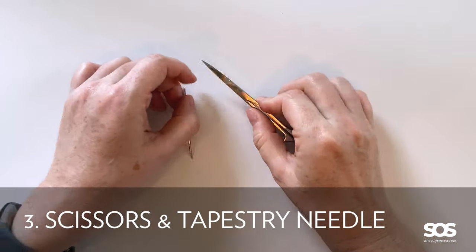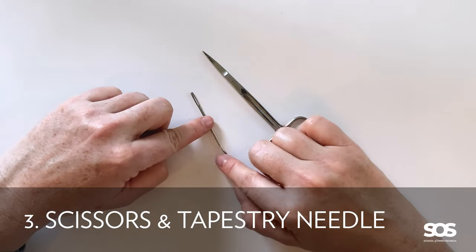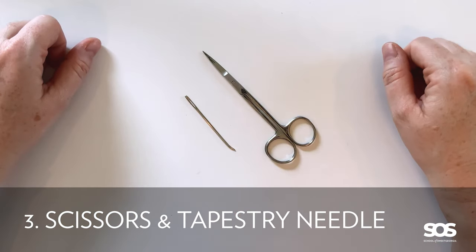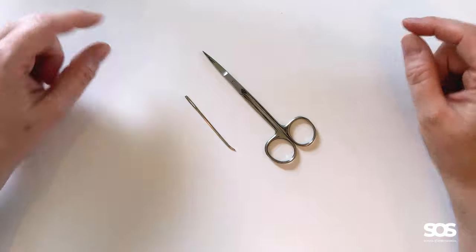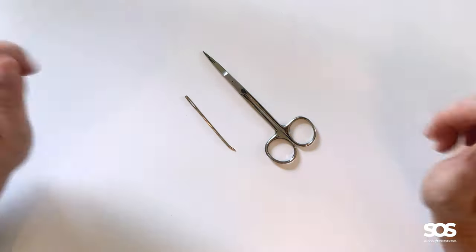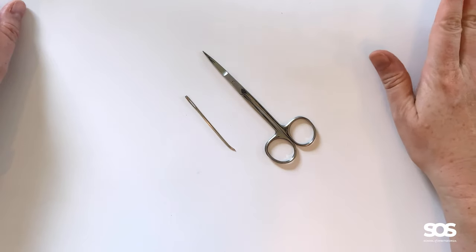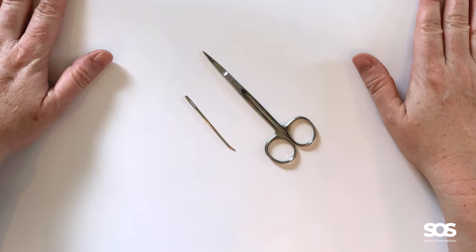And then the last two materials you need are a pair of scissors and what's called a tapestry or a yarn needle to be able to weave in your ends, those little tails when we're done. Hopefully you'll only have two of them and I'll show you how to use that later. And that's all you need to get started making your first knitted project.